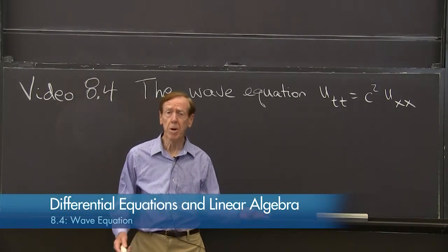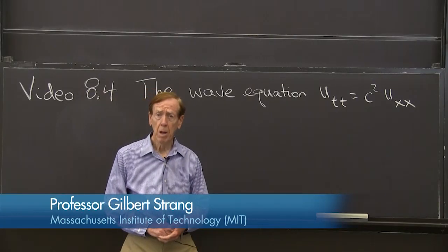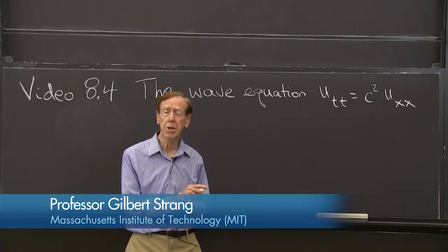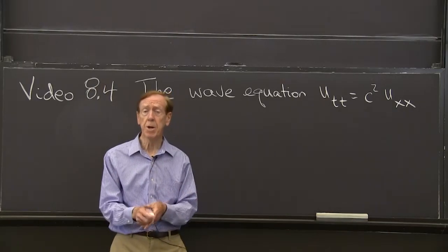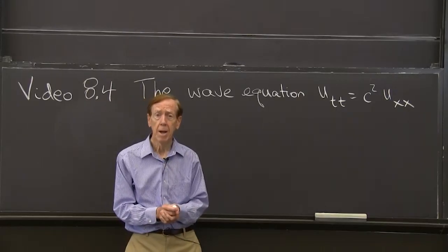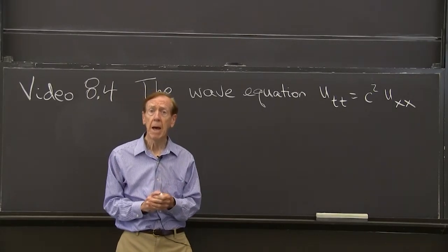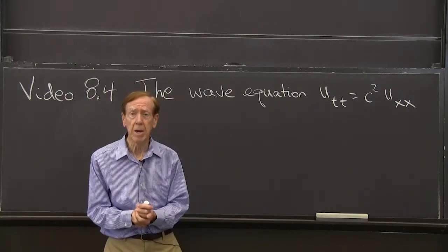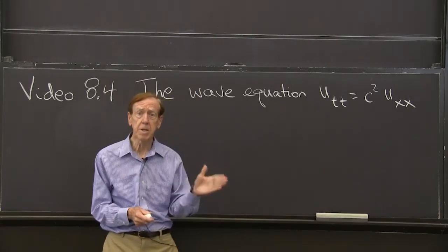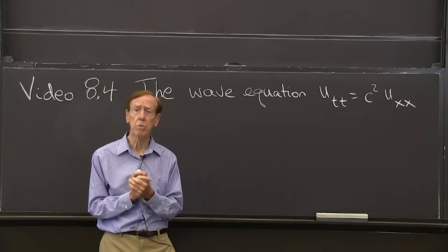This video is about the third of the great trio of partial differential equations. Laplace's equation was number one, called an elliptic equation. The heat equation was number two, a parabolic equation. Now we reach the wave equation, number three, called a hyperbolic equation. Somehow the three equations remind us of ellipses, parabolas, and hyperbolas. They have different types of solutions.